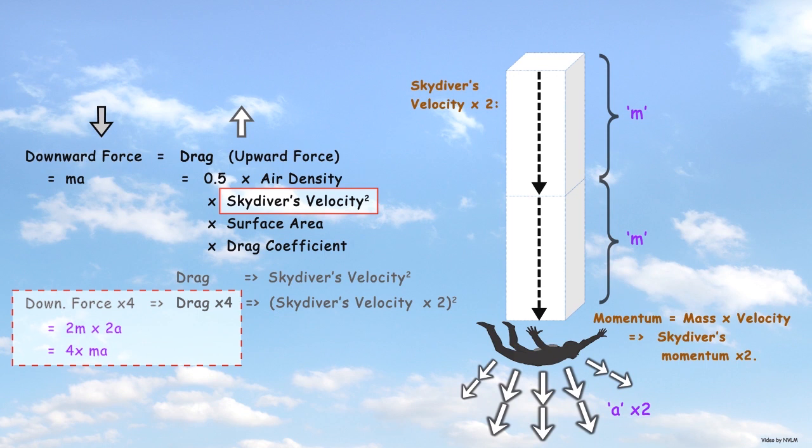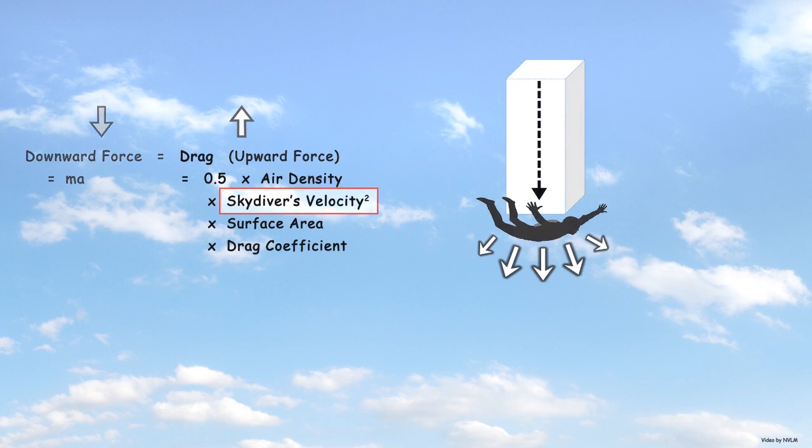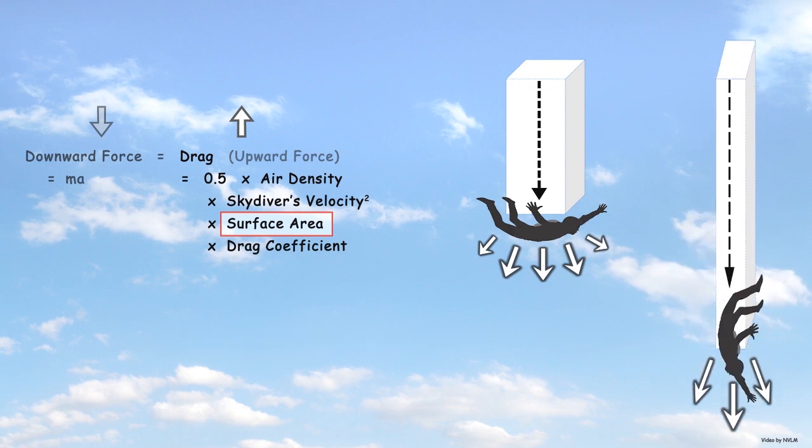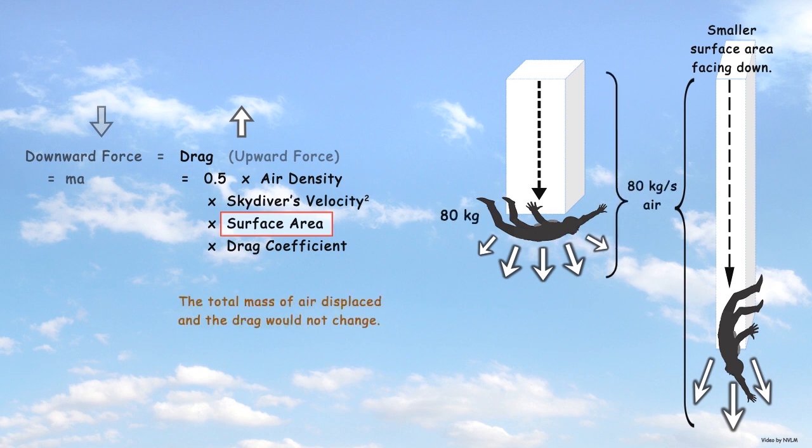That's it! Skydivers fall faster when descending head first. A smaller surface area facing down means that the skydiver will need to fall a greater distance each second before displacing the same mass of air as before. This results in a higher terminal velocity but the total mass of air displaced and the drag would not change.